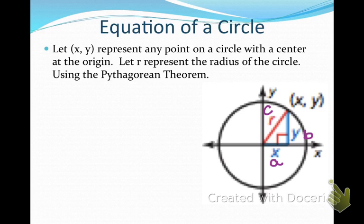We're going to think of a circle on a coordinate plane. Let x and y represent any point on the circle with a center at the origin, and let r represent the radius of the circle. Looking at our diagram, we can see a right triangle. We can draw a right triangle and use the Pythagorean Theorem, where our radius is the hypotenuse and our x and y values represent the lengths of our legs.